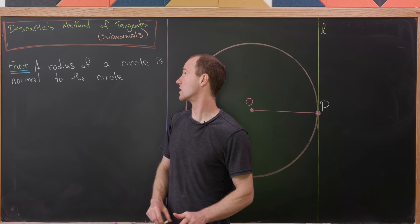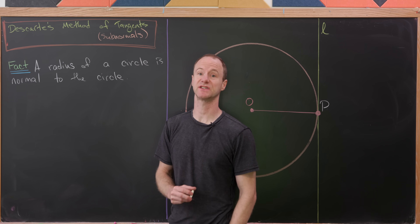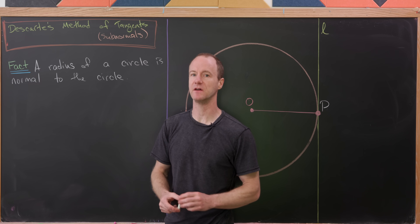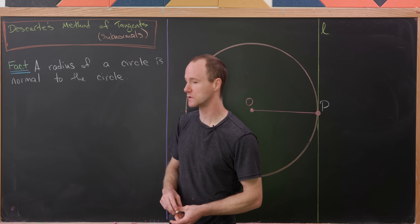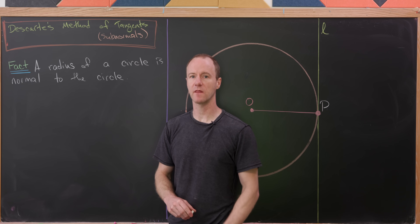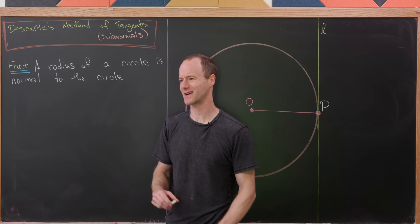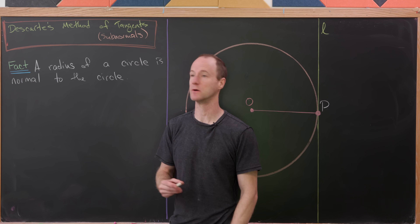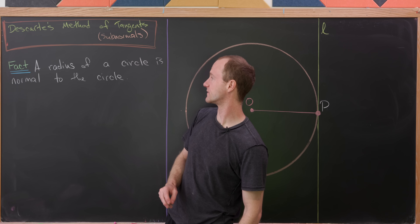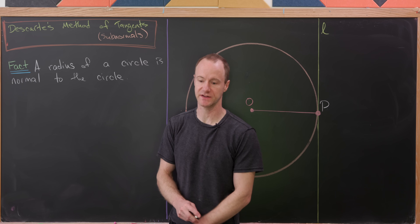Today we're going to look at Descartes' method for finding tangents to curves. Sometimes this is called the method of subnormals. It relies on the following well-known fact, but we're going to prove this fact just for completeness: a radius of a circle is normal to the circle.